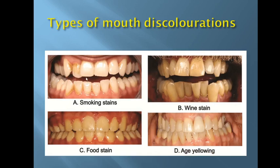Different types of mouth discoloration include smoking stains, wine stains, and aging — where the teeth become yellowish in color. Food stains will also cause discoloration of the teeth.